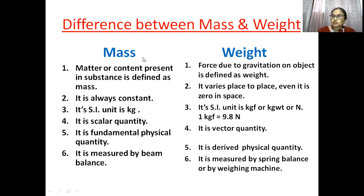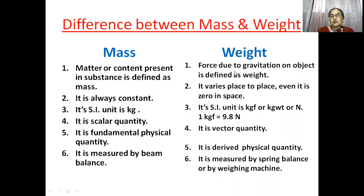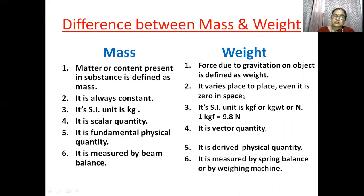In the previous class I gave an idea about this: mass is the matter contained in a substance. It never changes on the earth surface, never changes in space, never changes on any other planet. But weight is the force due to gravity, so it always changes. From the earth surface it is different — same object, weight is different in space, different at different heights, and different on another planet. It may be zero in space. Weight is the force due to gravity; mass is the content present.